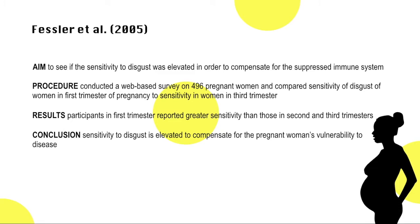Let's look at a study conducted by Fessler et al. in 2005. They aimed to see if the sensitivity to disgust was elevated in order to compensate for the suppressed immune system. In women's first trimesters of pregnancy, hormones lower their immune system so that it does not fight the new genetic material in the womb. In their second and third trimesters, the immune systems are suppressed less and more or less restored to their original state prior to the pregnancy.